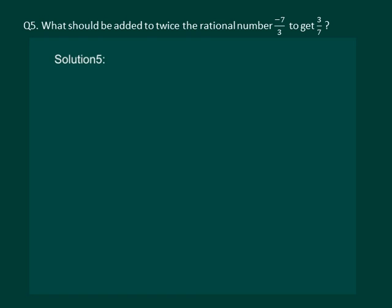Let us read the question. What should be added to twice the rational number minus 7 by 3 to get 3 by 7? Let us try to understand the question.